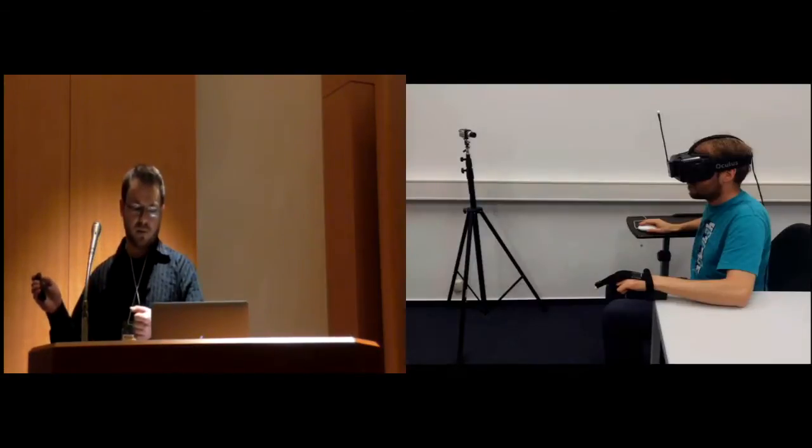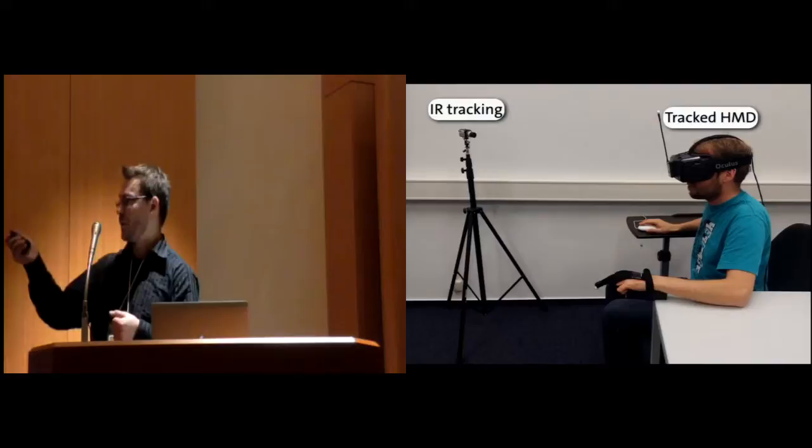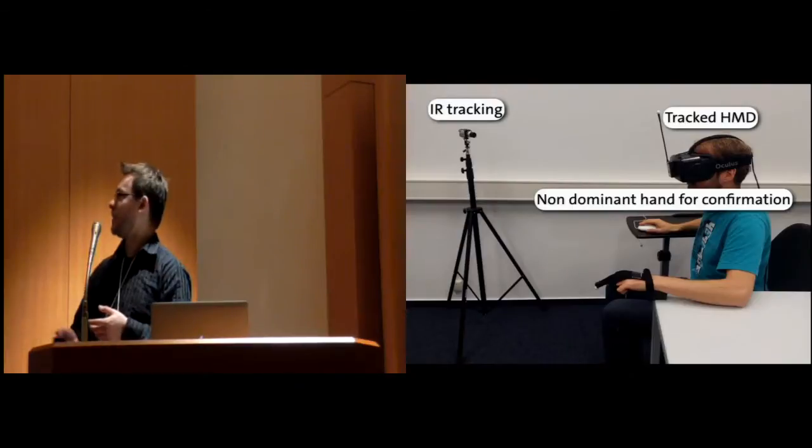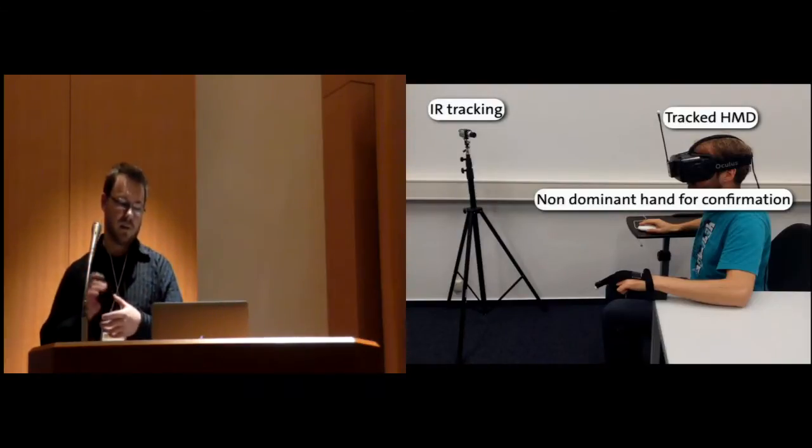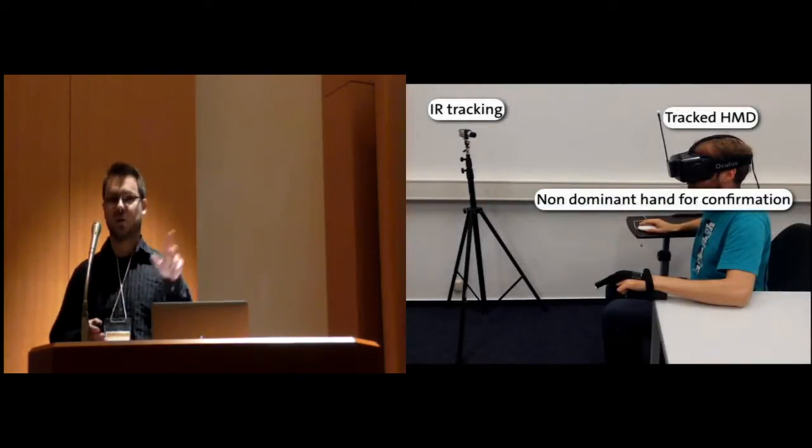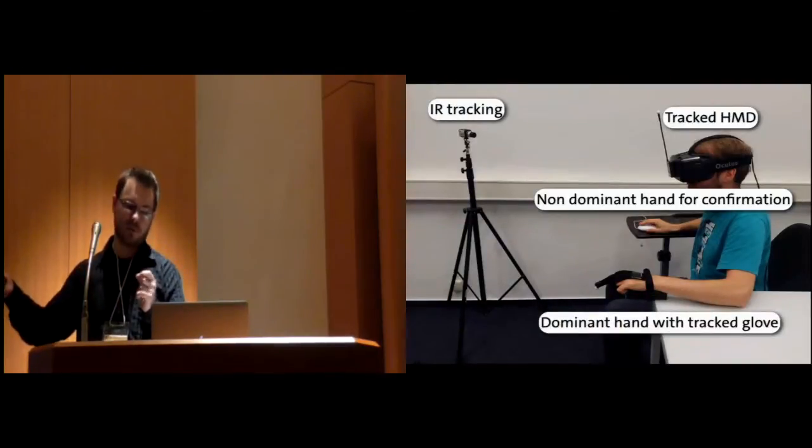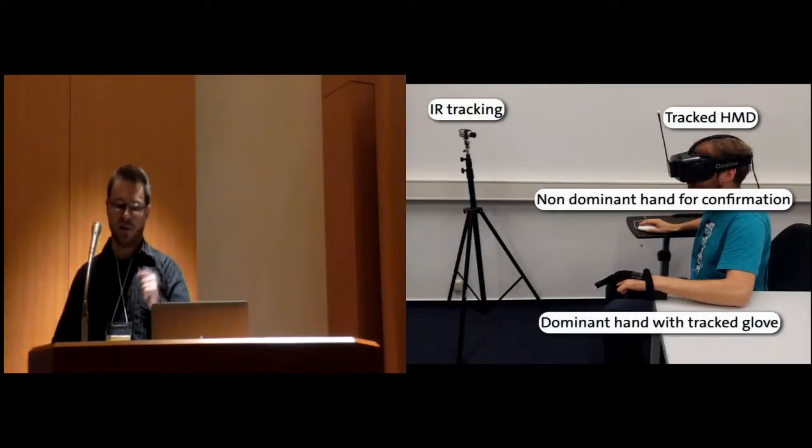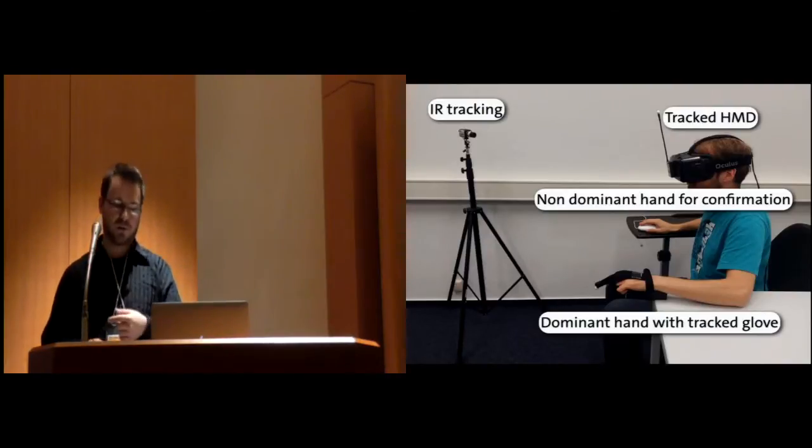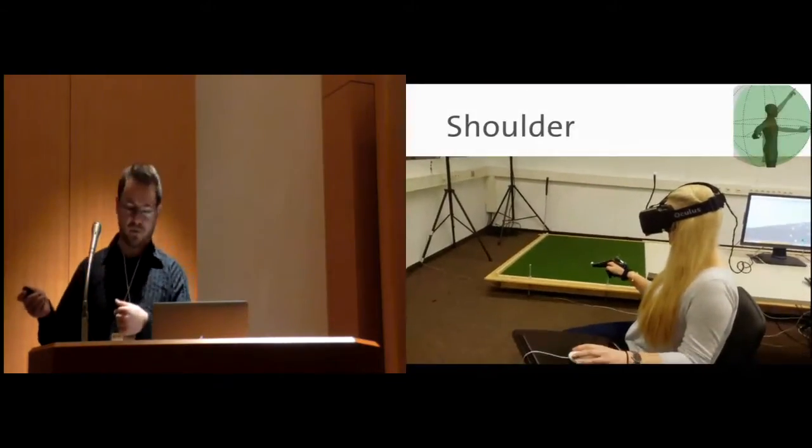And the setup was relatively simple. We had infrared tracking with a PPT tracker. We tracked the DK2, so the head. We had a non-dominant hand for confirmation of a selection. This is usually something where people start discussing. We used this confirmation with a non-dominant hand to avoid hand tremors, especially when you have very small selection processes with the wrist condition, for example. The hand tremors, the jitter you have in your hand might cause some problems when you press a button with your hand that you are using for the selection also. So, we used the non-dominant hand for this.